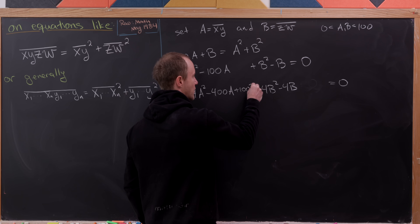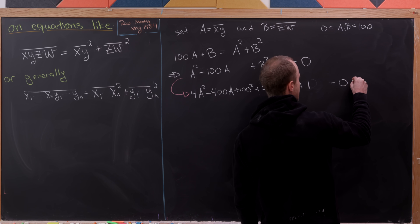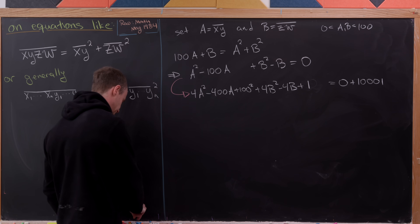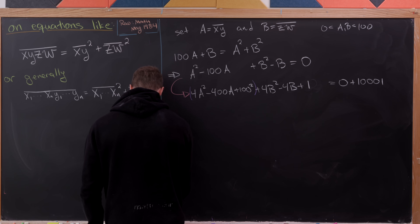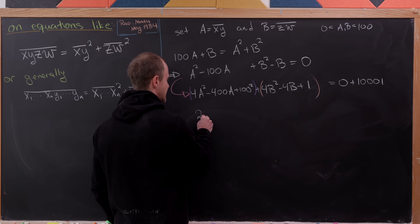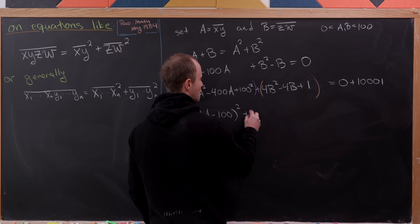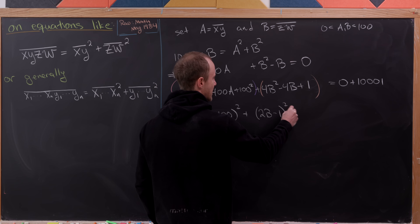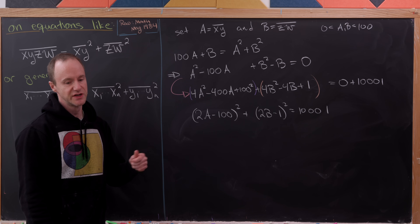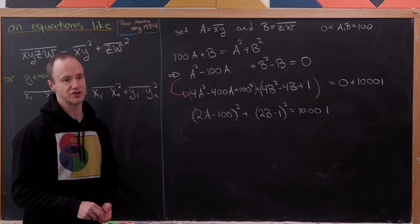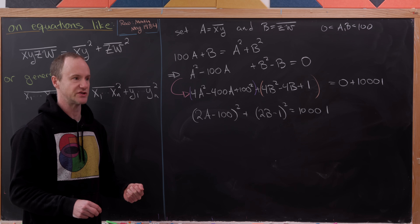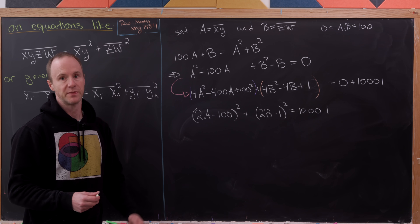To form perfect square trinomials, we add 100 squared and 1 to the left-hand side, and 10,001 to the right-hand side. Grouping those terms, we can factor to get 2A minus 100 squared plus 2B minus 1 squared equals 10,001. Since 2A minus 100 and 2B minus 1 are both integers, we've expressed 10,001 as a sum of two integer squares — and the trick is to look at all ways of doing so.